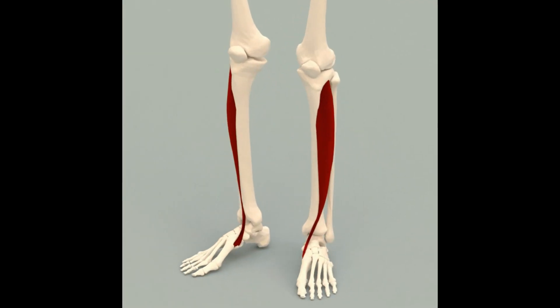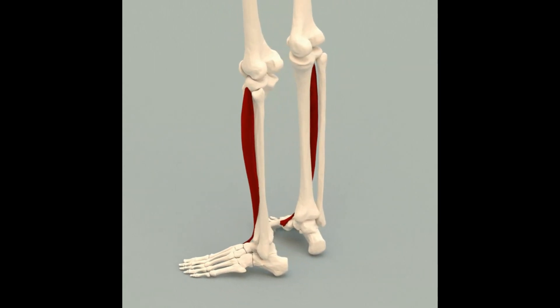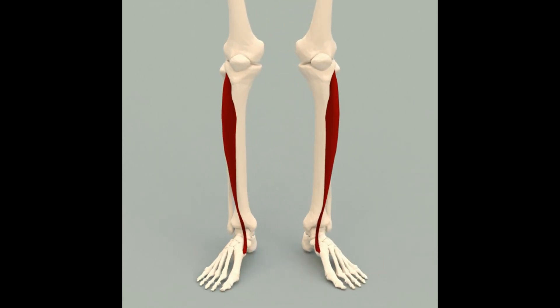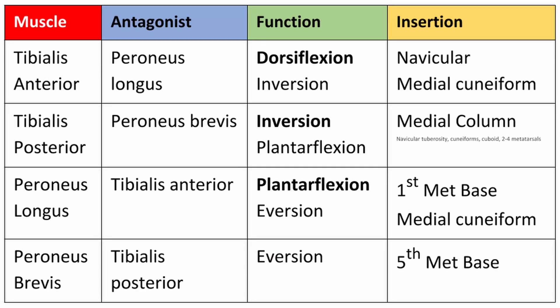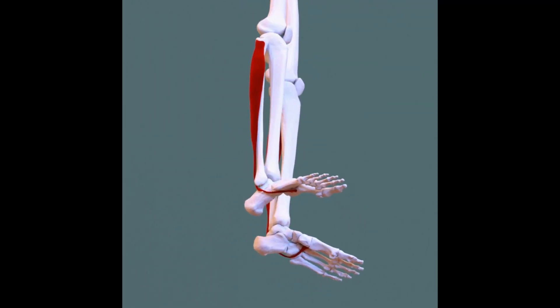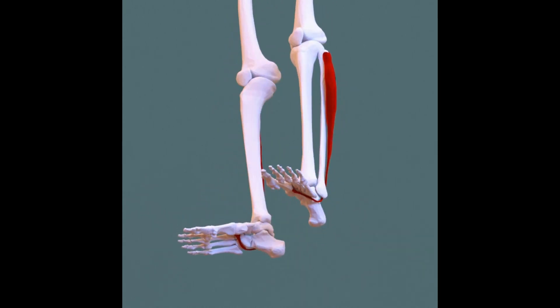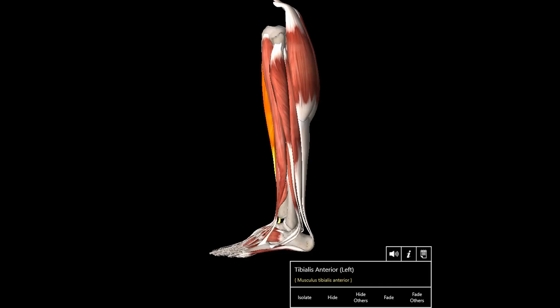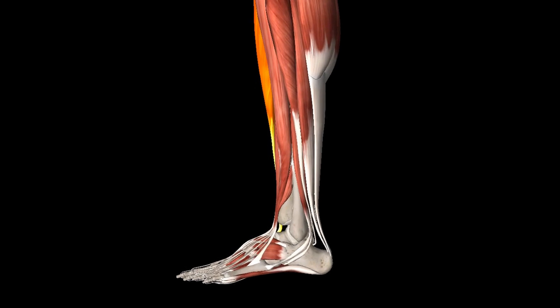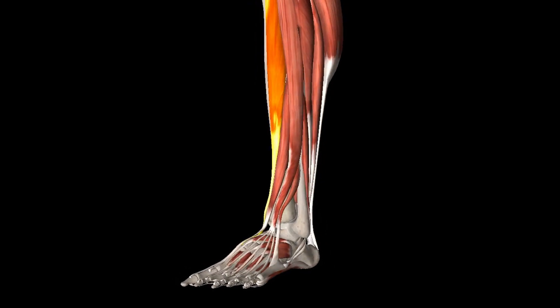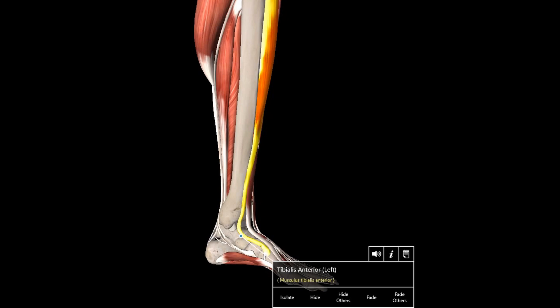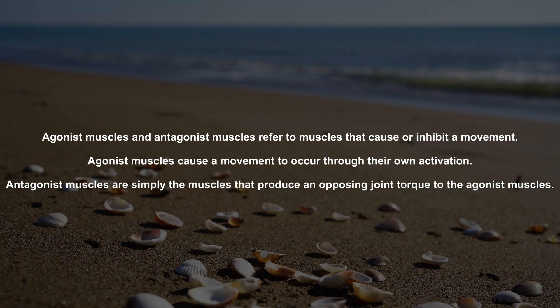The first muscle is the tibialis anterior. Its main function is dorsiflexion and inversion, and it inserts on the navicular and the medial cuneiform. In just a second, we're going to be talking about the peroneus longus, which is the antagonist of the tibialis anterior. Notice how on this chart, it does the exact opposite motion at the foot and ankle joint. This is the idea of agonist and antagonists.